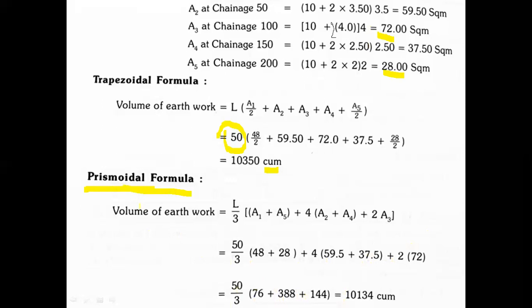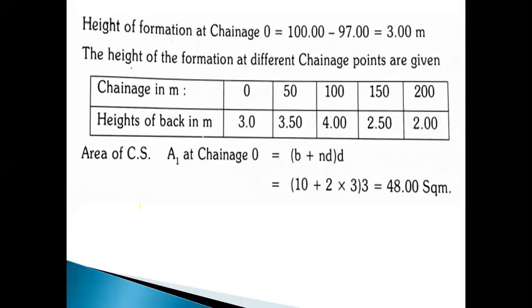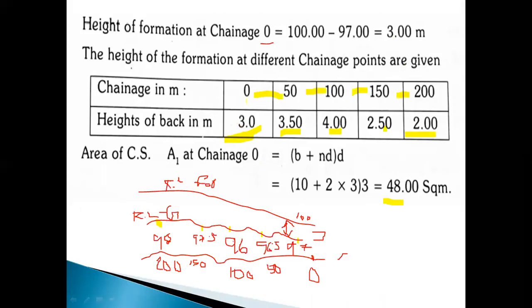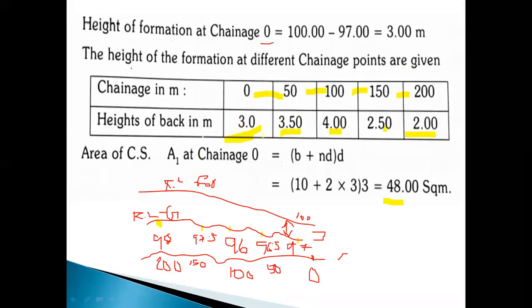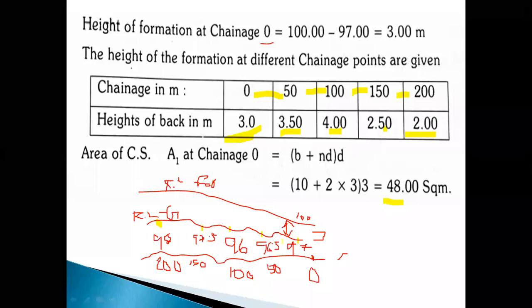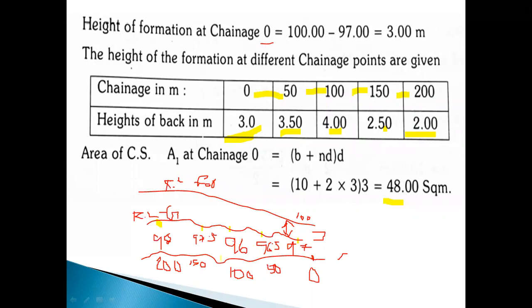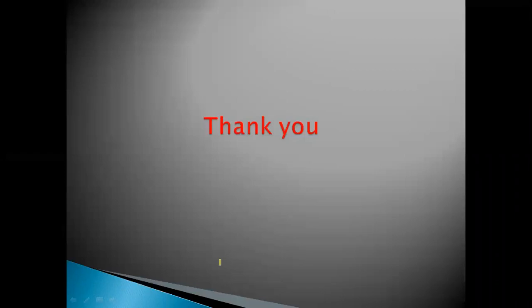In this formula we calculate the chainage, RL of ground and RL of formation to find the height of the bank in meters at different heights. Thank you very much. Any doubt in these problems? Thank you.